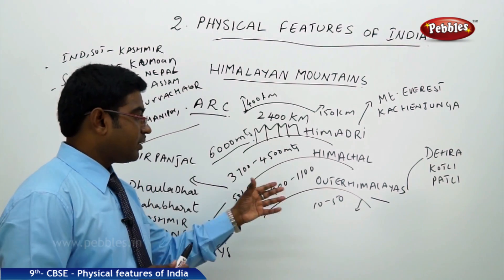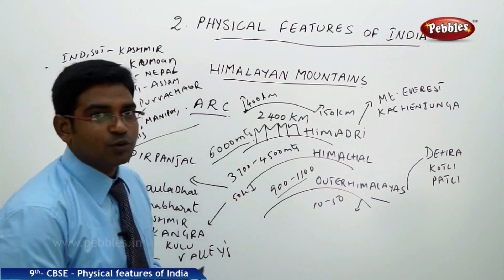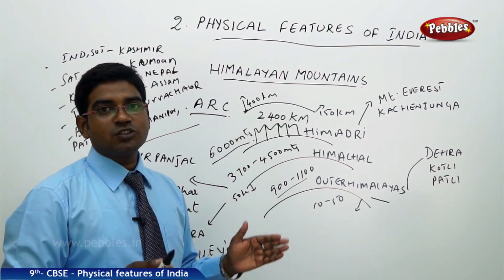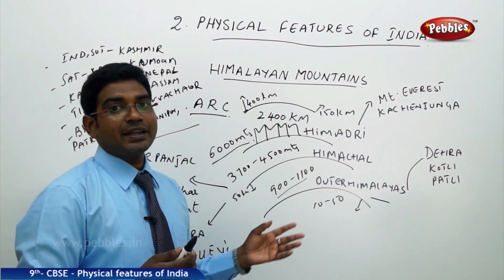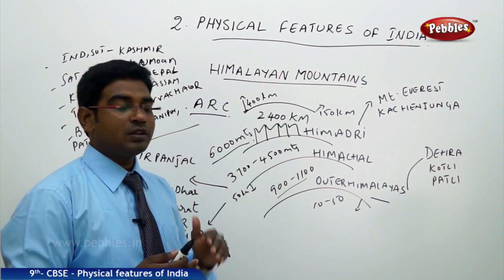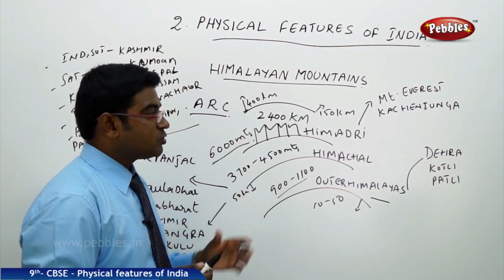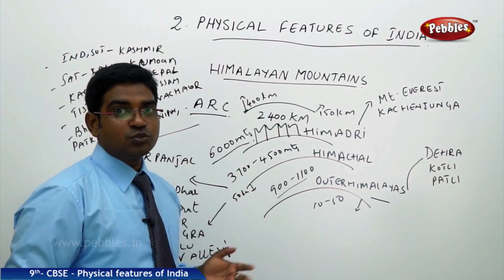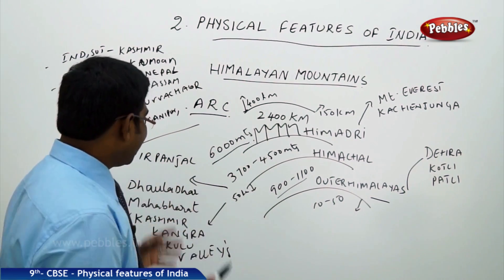The last major range is the Outer Himalayas, with an average height of just 900 to 1100 meters and a width varying from 10 to 50 kilometers. These are discontinuous mountain ranges — very small with much lower average height compared to Himadri or Himachal. The most notable features here are the dunes: the Dehra Dun, the Kotli Dun, and the Patli Dun, which are important attractions of the Outer Himalayas.